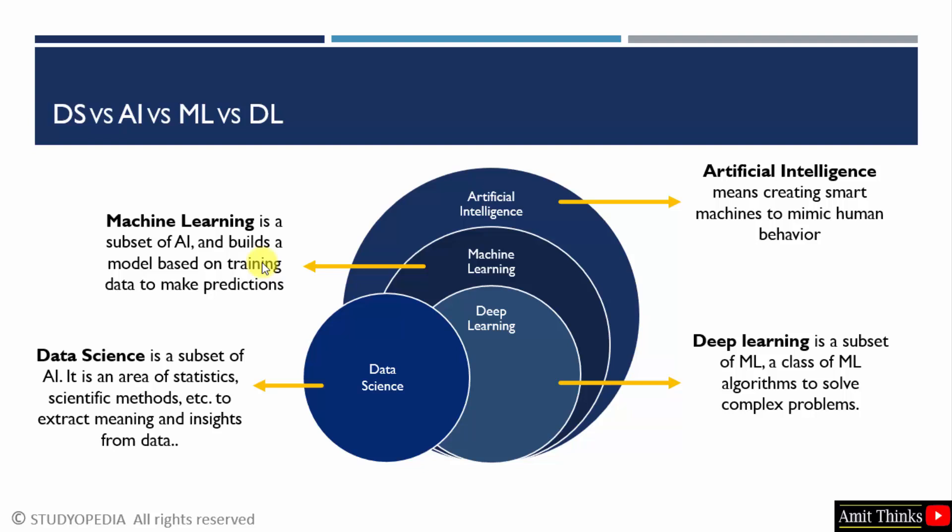Machine learning focuses on developing algorithms and statistical models that enable a computer to learn from and make predictions or decisions based on data, without being explicitly programmed to do so. Its techniques include supervised, unsupervised, semi-supervised, and reinforcement learning. It is used in image and speech recognition, natural language processing, forecasting, medical diagnosis, and more.